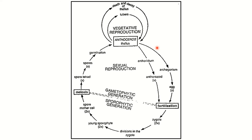In the gametophytic phase, male and female structures — antheridia and archegonia — are formed. Antheridia produce male gametes (antherozoids), and archegonia are the female reproductive structures. The capsule structure completes the young sporophyte, and spore tetrads under suitable conditions germinate to form a young gametophyte, completing the life cycle of Anthoceros.